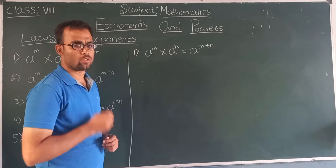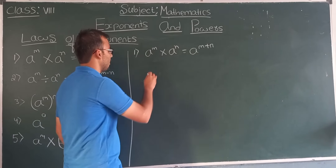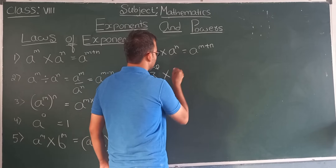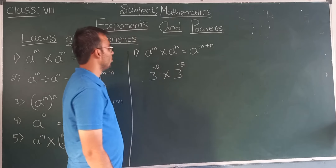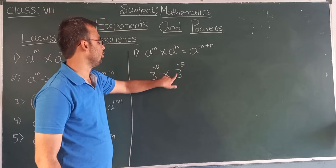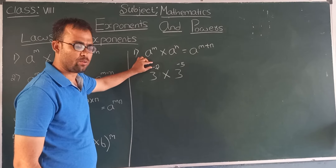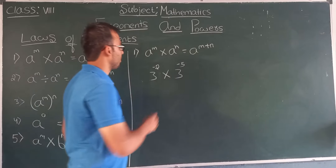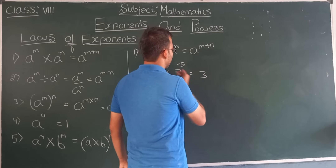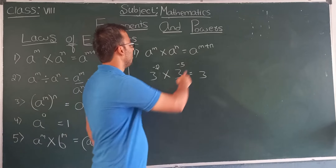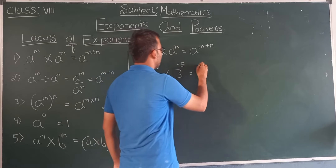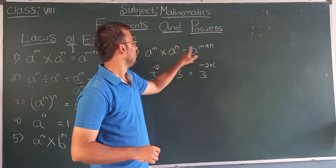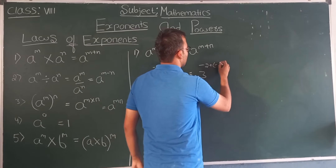Now let us solve some more examples. So far we have seen positive powers, but if the powers are negative, we still need to use the same law. Write the base as it is, then a to the power m plus n, where m is minus 2 and n is minus 5.